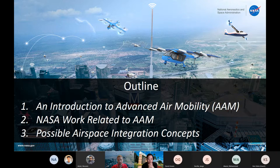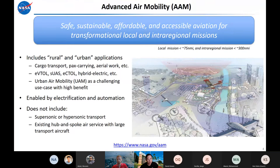Advanced Air Mobility — when we speak of it at NASA, we mean safe, sustainable, affordable, and accessible aviation for transformational, local, and intra-regional missions. That includes urban air mobility, but is broader than just urban air mobility. When we say transformational local missions, that would include the sorts of missions about urban air mobility — moving from one side of a major urban area to another, up to circa maybe 75 miles.